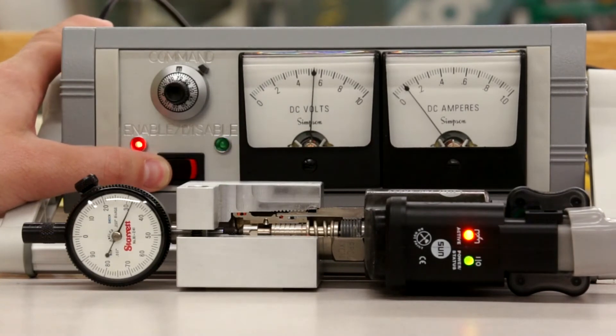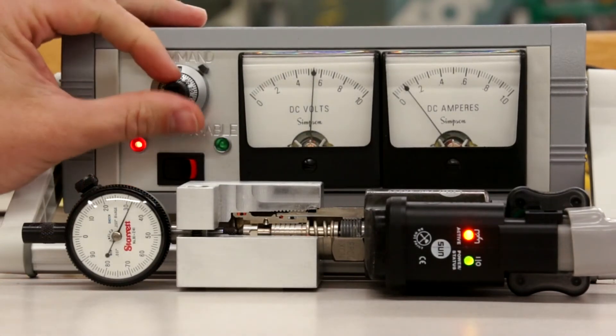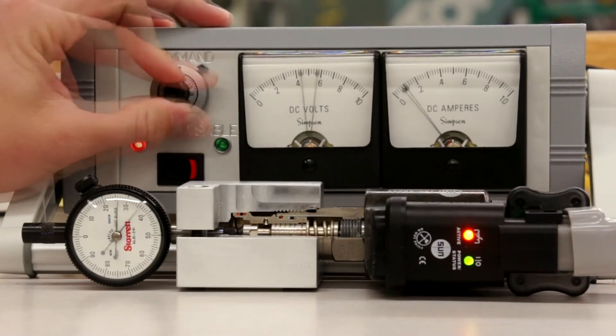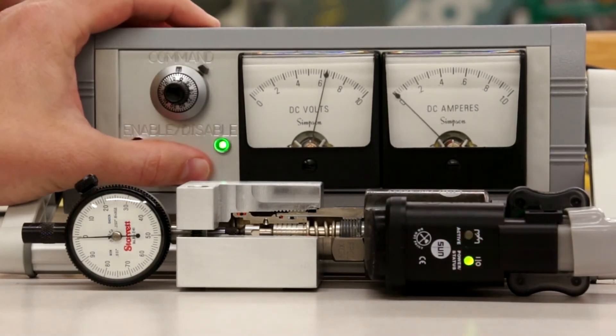If we switch the enable on, the amplifier will behave normally when you sweep from 0 to 10 volts. Turning off the enable will disable the output.